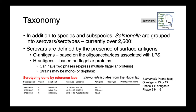Within these species and subspecies, we also have a number of serotypes or serovars — currently over 2,600 which are recognized. These serotypes are defined based on the presence of surface antigens: the O antigens, which are oligosaccharides associated with LPS, and H antigens, which are based on flagellar proteins.